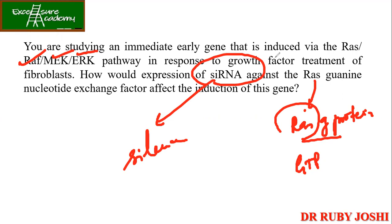We mainly use siRNA to silence that particular gene expression. So by using siRNA against the Ras guanine nucleotide exchange factor, we are going to inhibit the induction of this gene. Very simple, straightforward answer.